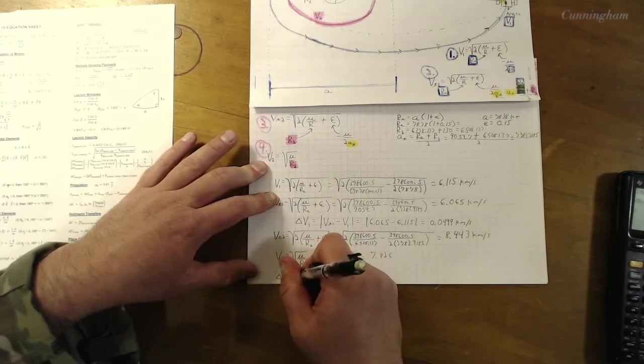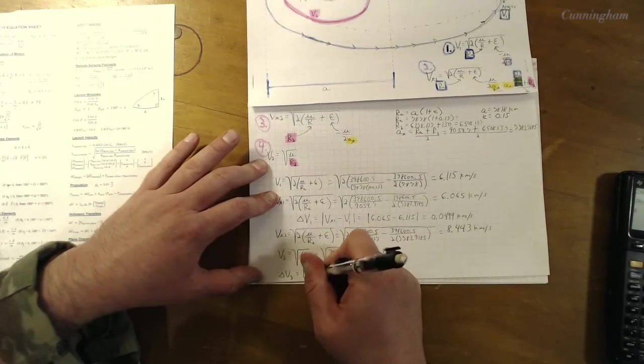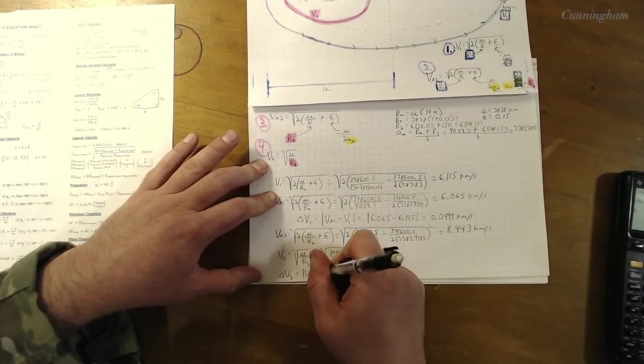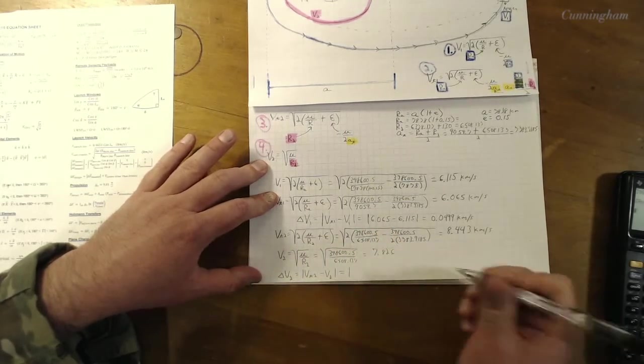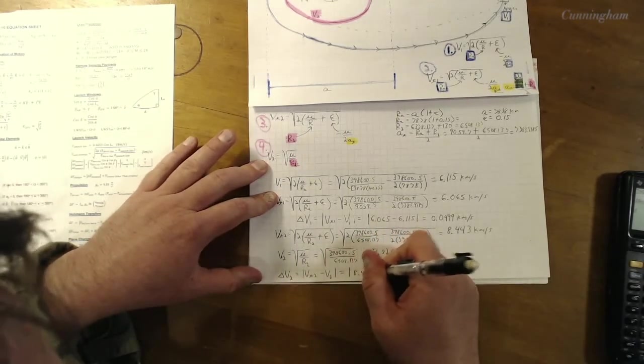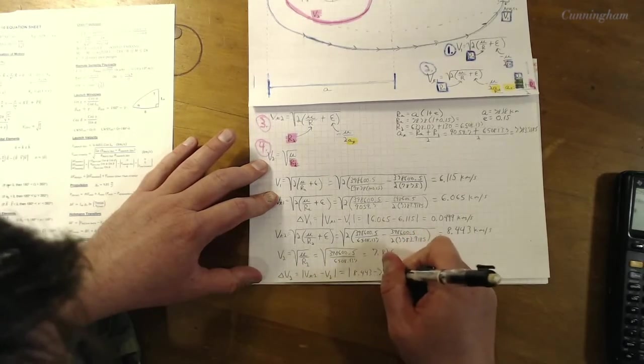So that equals that very small initial delta v, 0.0499, plus 0.617. So what I get is just about 0.667 kilometers per second to bring our satellite back in and burn it up.